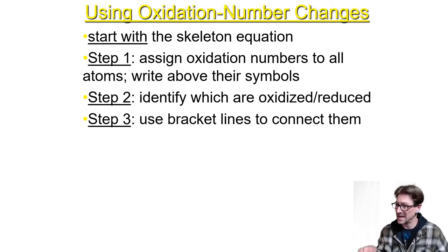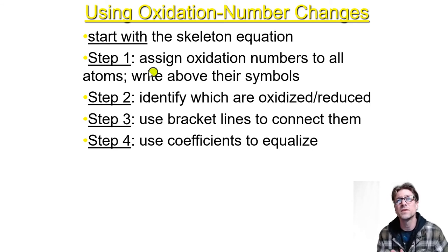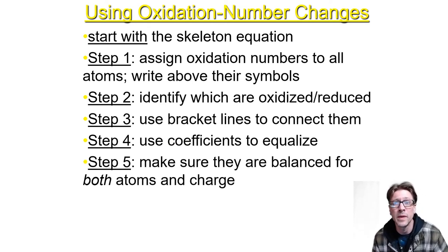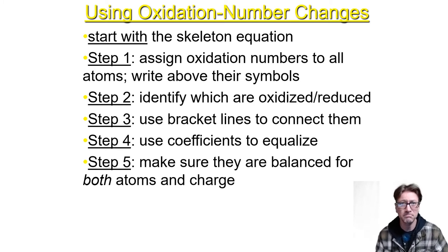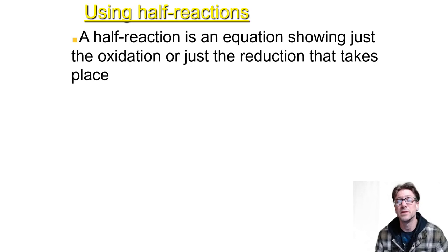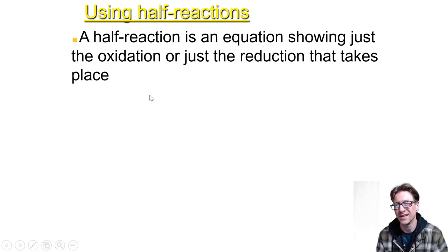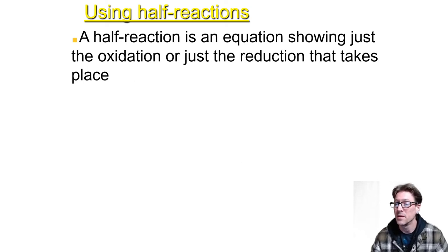Step three, use brackets to connect one species to another to track electrons, and use coefficients to equalize them. Step four, make sure atoms and charges — the electrons — are balanced. That's the oxidation number change method. For half-reactions, we write an equation showing just the oxidation or just the reduction that takes place.